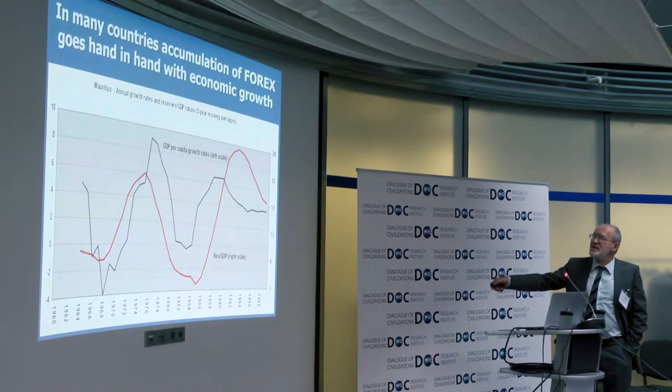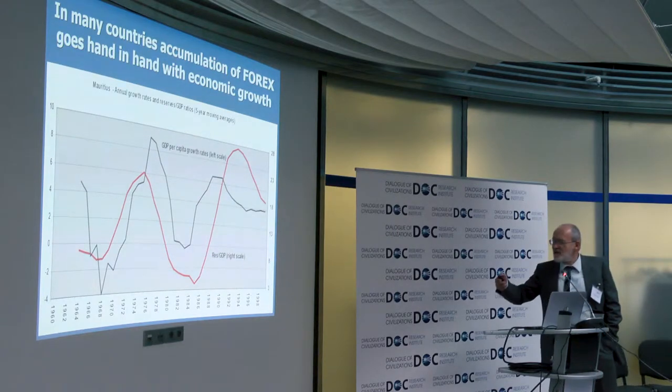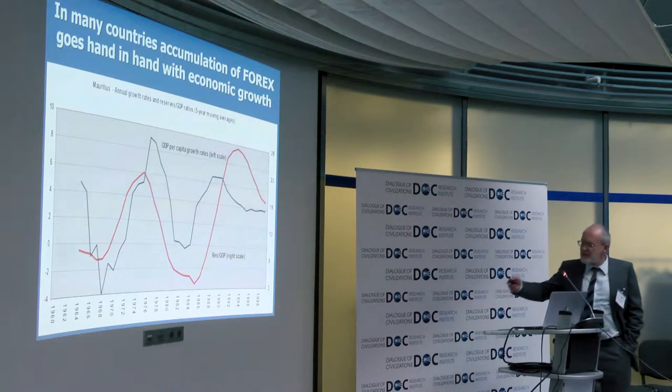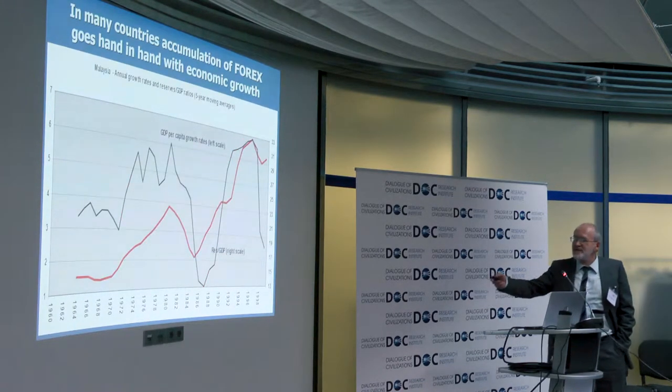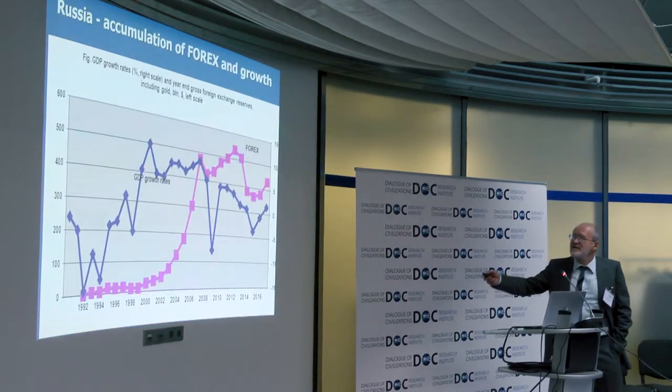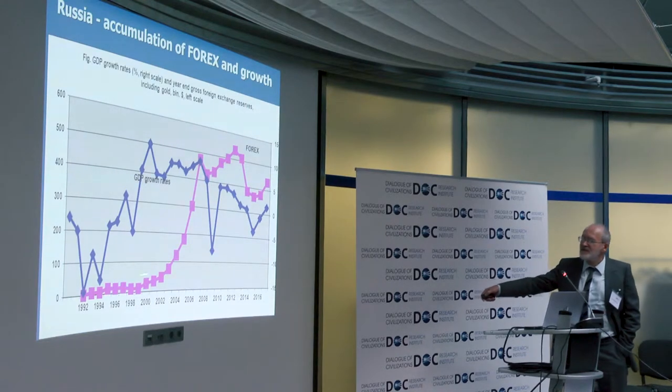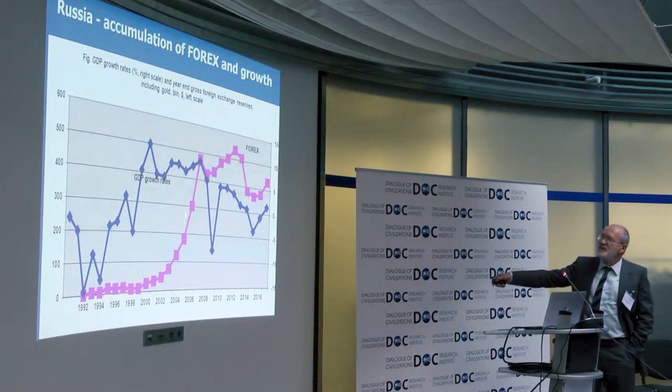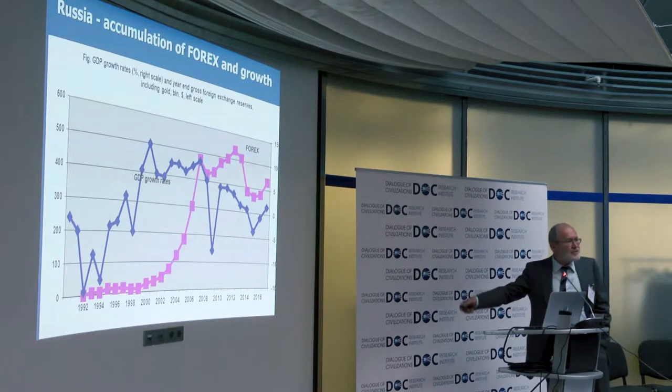Here are some charts to start the conversation. In many countries, accumulation of reserves — this is Mauritius — goes hand-in-hand with GDP per capita growth rates, which is the black curve. Once reserves are accumulated, growth rates of GDP increase, and once reserve accumulation goes down, growth rates of GDP per capita go down. Of course, there is the chicken-and-egg question. This is Malaysia — there is a relationship here. This is Russia — previously Russia didn't have any reserves, but when it started to accumulate reserves, growth rates increased, and then they fluctuated together.